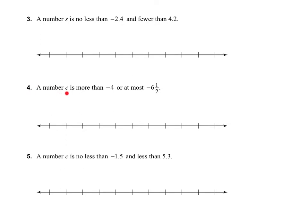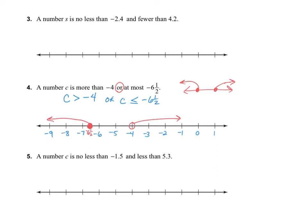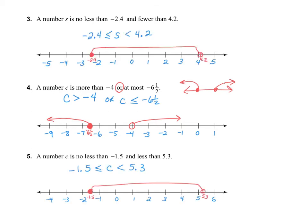Let's take a look at number 4. A number c is more than negative 4 or, at most, 6 and a half. We have the word OR. So we have c greater than negative 4, or c is at most 6 and a half — meaning less than or equal to 6 and a half. Now we just graph it. I would like for you to try number 3 and number 5 on your own, so pause the video and then turn it back on when you are ready to check your work.